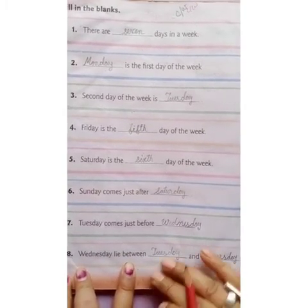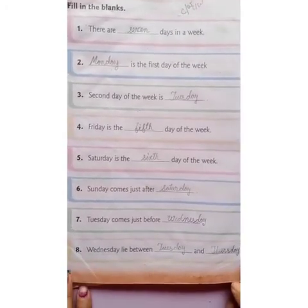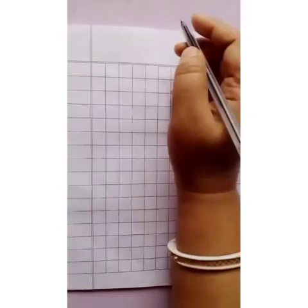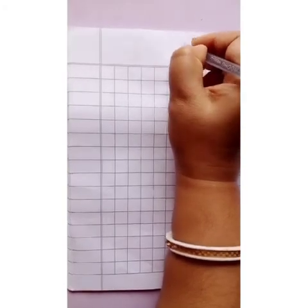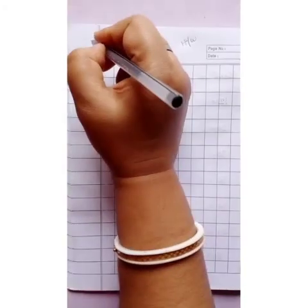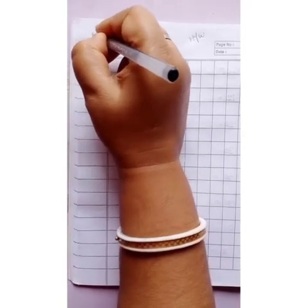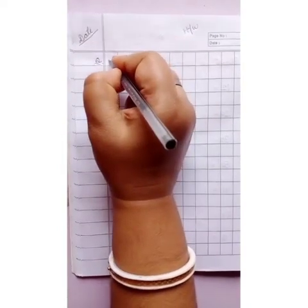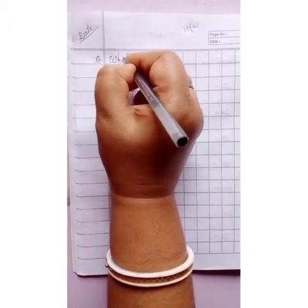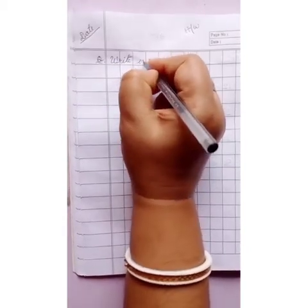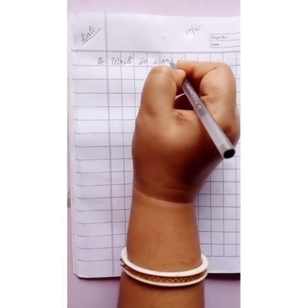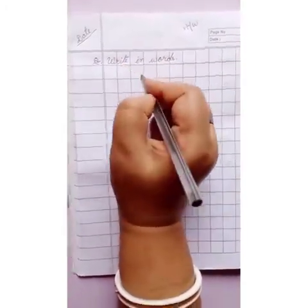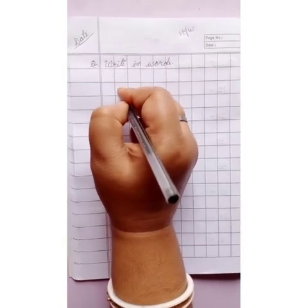All of you practice this at home. For today's homework, take out your mathematics copy, write HW and the date on the left top corner of your copy. The question is: write in words — w-r-i-t-e in w-o-r-d-s. Leave one line gap and write the numbers.